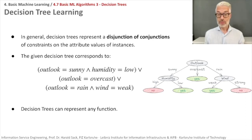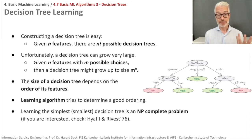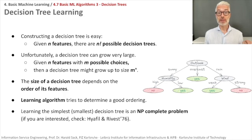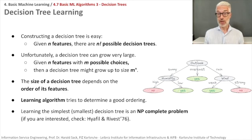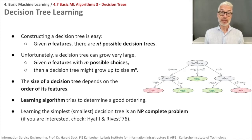However, we first need to know how to create such a decision tree efficiently. Constructing one is conceptually easy, but given n features there are n-factorial possible decision trees — an exponential number. Imagine you have 20, 30, 40, or 50 features — your tree grows immensely. With 100 or 1000 features, this won't fit in your computer. A decision tree can grow very large, and with m possible choices per feature the size can be m to the power of n.